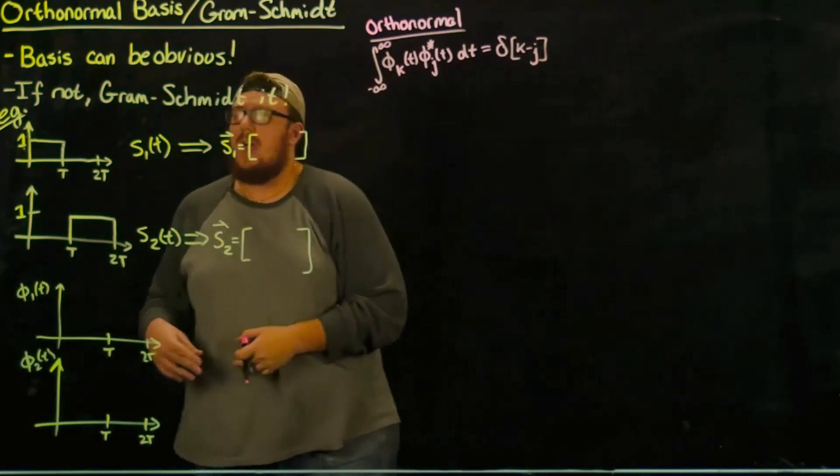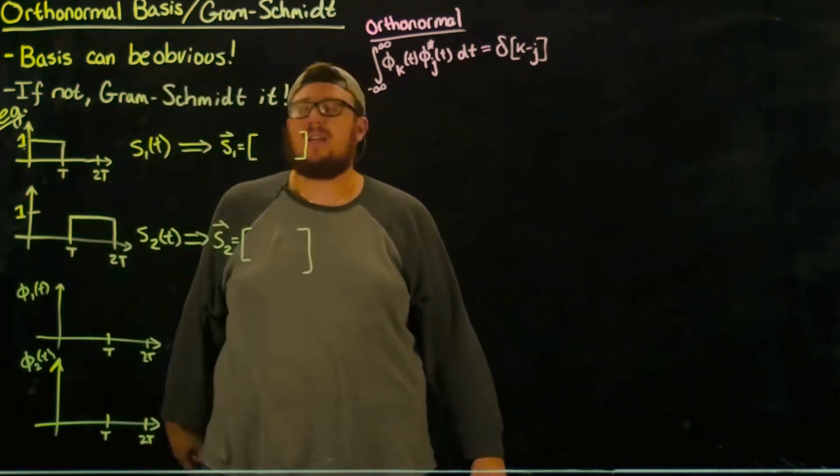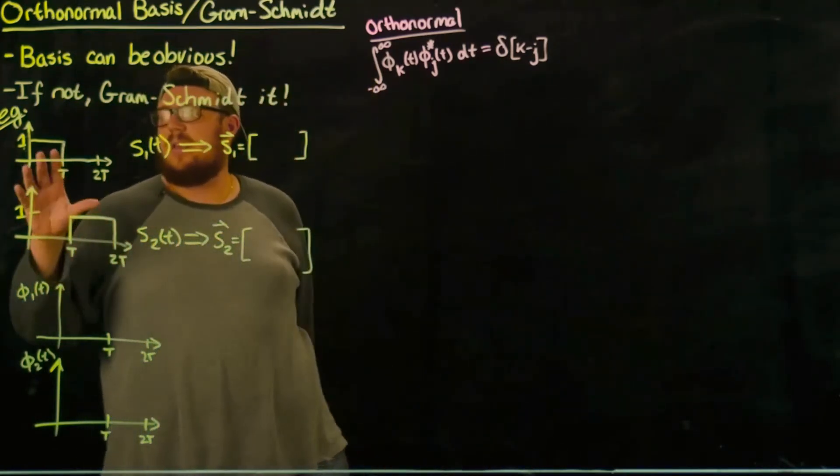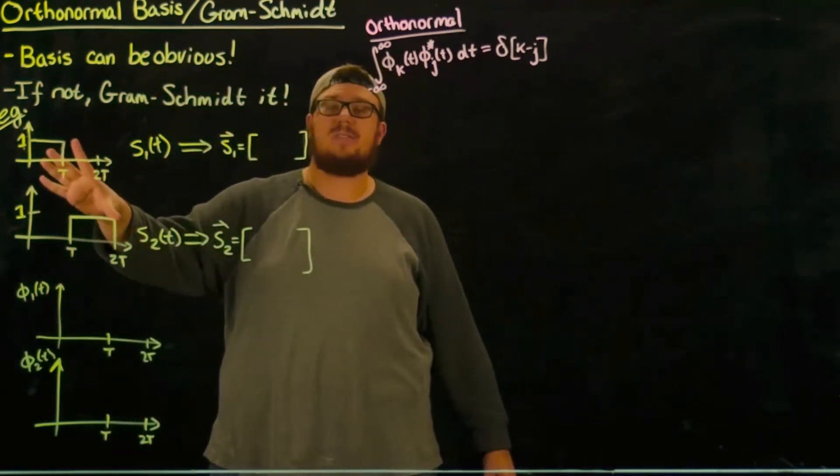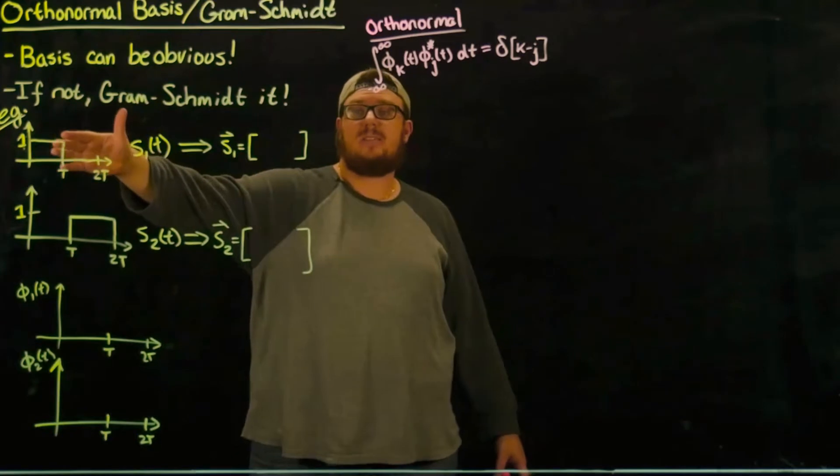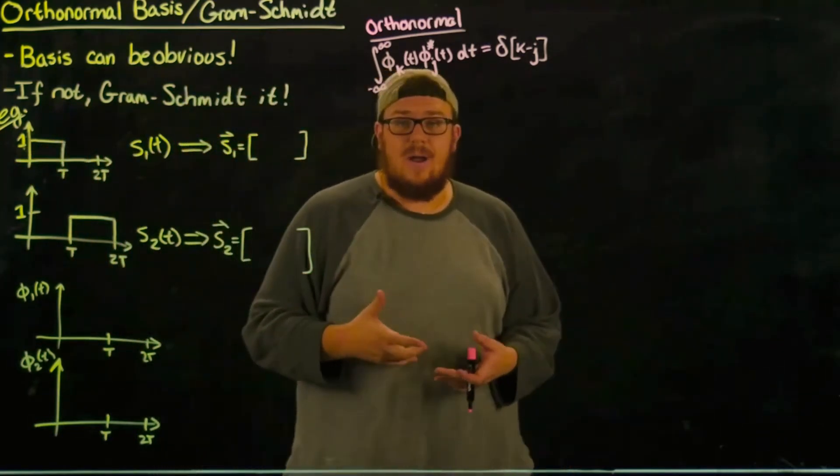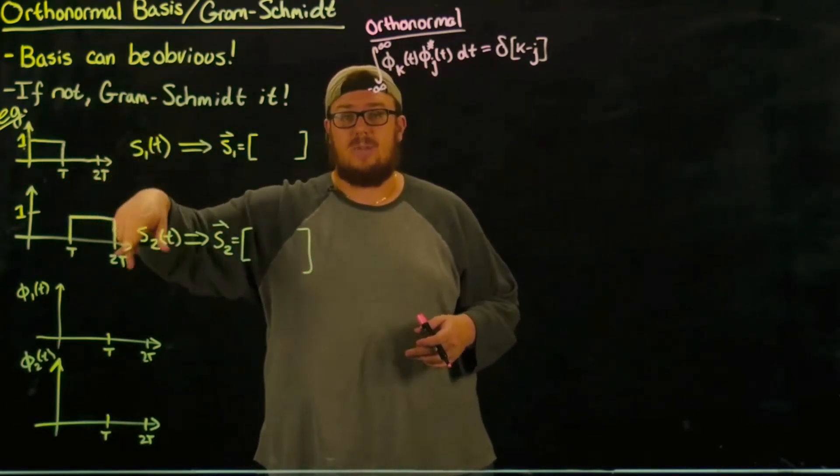And what we see here is that if we take the dot product of these two signals, you get a number when you take the signal with itself. But if you dot product signal one with signal two, you actually get zero. So in the case that these are already orthogonal to each other, meaning that their dot product is zero, we can just normalize these signals and use them as our basis functions.